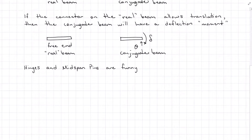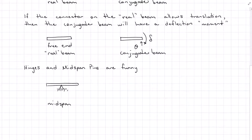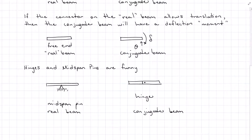Hinges and midspan pins are special cases. If on the real beam I have a pin acting somewhere in the middle of the beam, then on my conjugate beam I'm going to replace that with a hinge. This works vice versa: if we have a hinge on the real beam, then we represent it with a midspan pin on the conjugate beam.